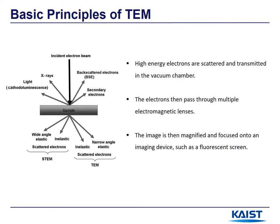Let's look at the basic principle of TEM. The accelerated electron beam is focused on the specimen, and then the electrons pass through electromagnetic lenses, so we can obtain a transmitted or scattered electron beam.